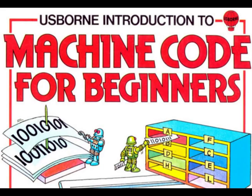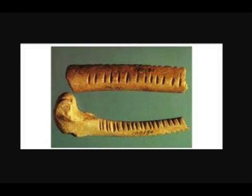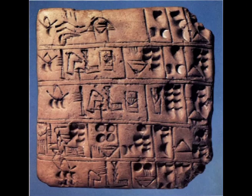Greetings happy coders and welcome to another video. Today we are back in the saddle with Usborne Books' Understanding Machine Code for Beginners, looking at the ZX Spectrum. In the previous episode we looked at the history of counting, going back several thousand years to examine some basic principles. I hope you enjoyed it — if you haven't seen it please go back and watch it.